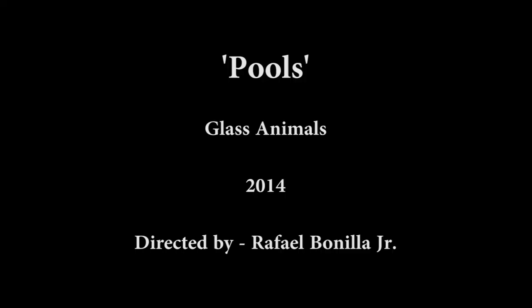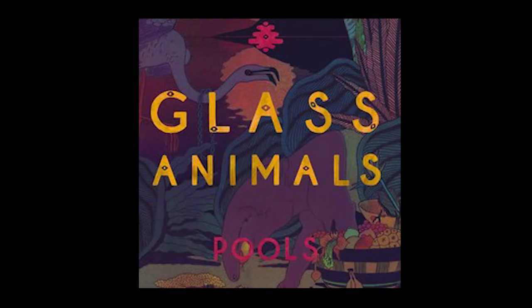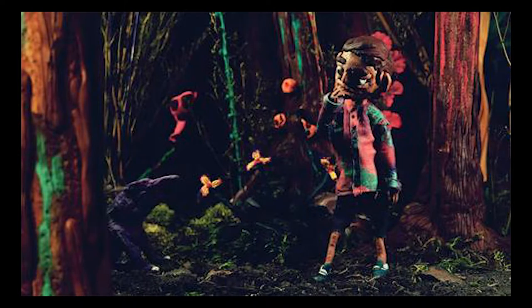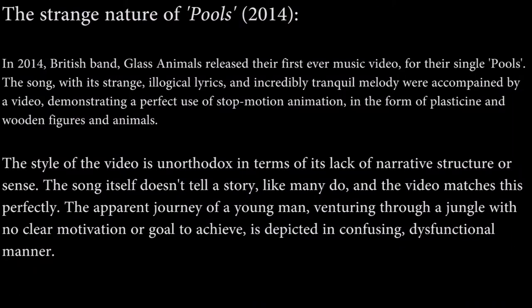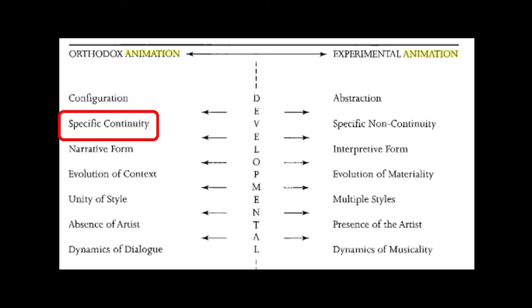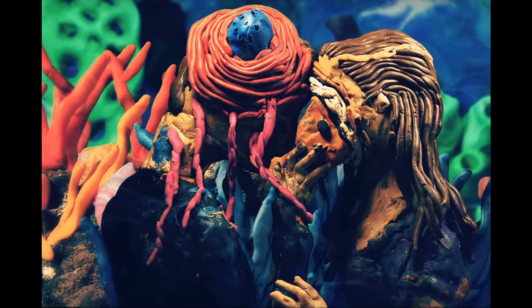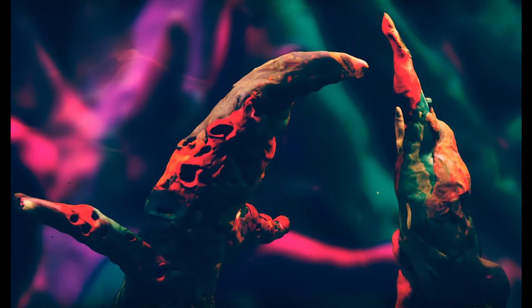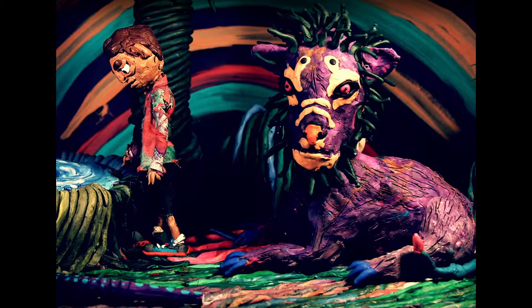The music video for Glass Animals' 2014 single, Pools, demonstrates a perfect example of stop motion animation, through the use of plasticine and wooden figures and characters. The storyline of the video itself is disjointed, with no clear equilibrium. This distinct lack of narrative structure immediately indicates that the use of animation within the video is certainly not orthodox. Wells' graph describes orthodox animations as ones that contain specific continuity and narrative form. Instead, the video denotes a more interpretive form due to its fragmented and confusing nature. There is no clear storyline for the audience to follow, which contributes to the hallucinating imagery and strange lyrics of the song.